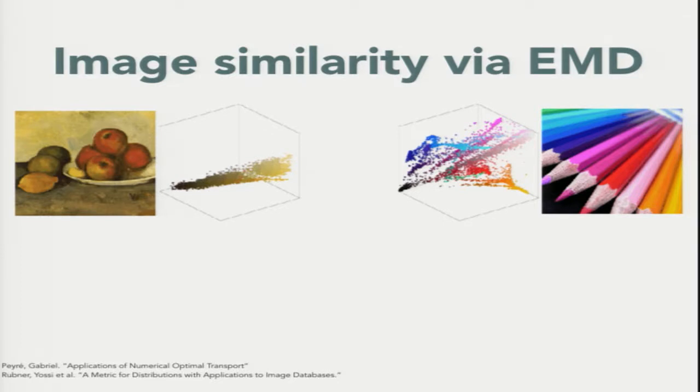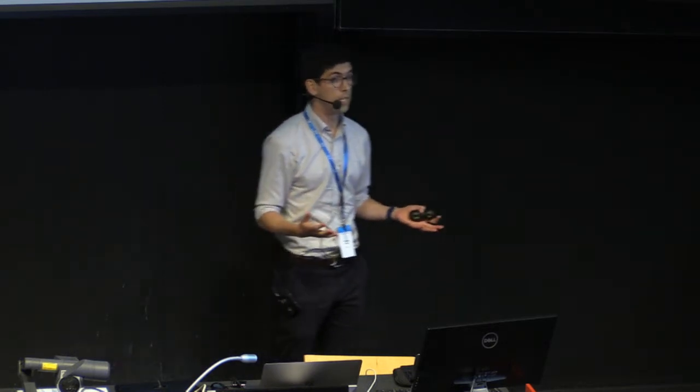And if I want to compare whether these two images are similar or not, I can use optimal transport to compute the Wasserstein distance between these two point clouds, which they called the Earth Mover Distance. So this was actually a really good idea and a really popular one that a lot of people in image processing liked.